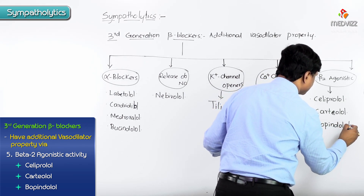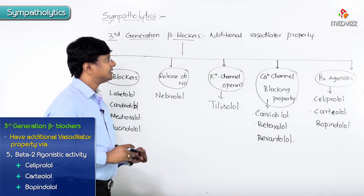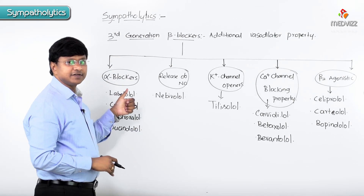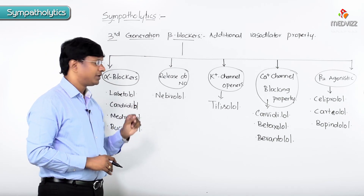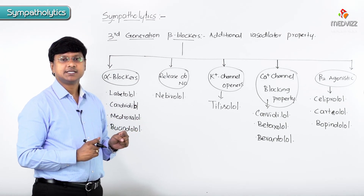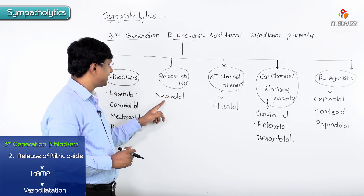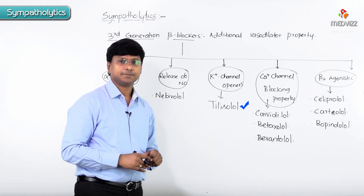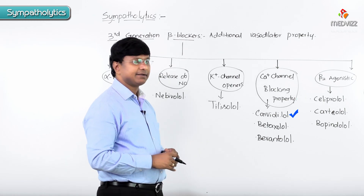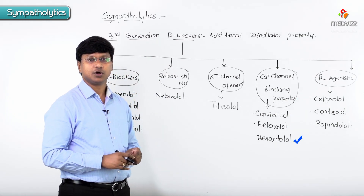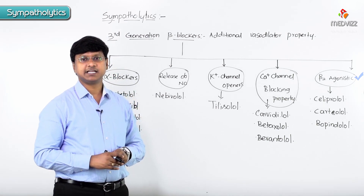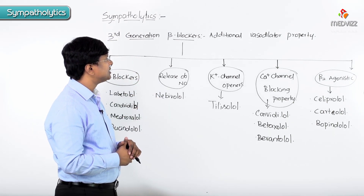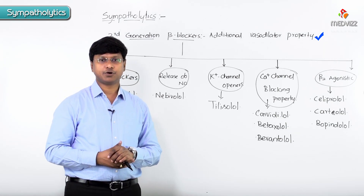To summarize: blocking alpha receptors causes vasodilatation; nitric oxide release increases cyclic AMP and causes vasodilatation — that is nebivolol; potassium channel opener is tilisolol; calcium channel blockers are carvedilol, betaxolol, and bevantolol; and the beta-2 agonists are celiprolol, carteolol, and bopindolol. These are all the third generation beta blockers with additional vasodilator property.